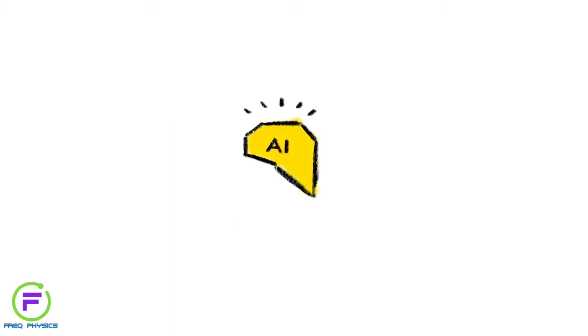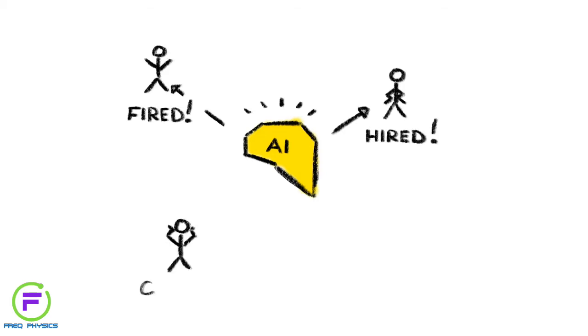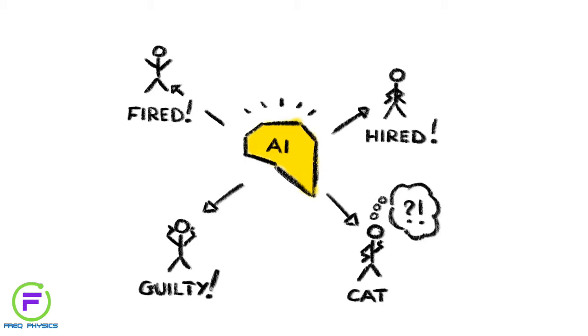4. Machines that make decisions we don't understand. Imagine failing a job interview, flunking a class, or being fined, all because a machine made a decision that no one could explain, but you had to live with anyway. Scarily, we're already on the slippery slope of giving smart machines the authority to make such decisions without being accountable for them.